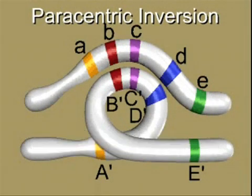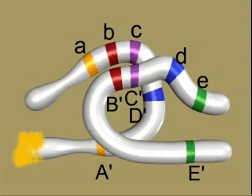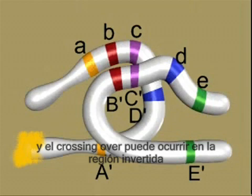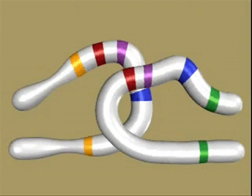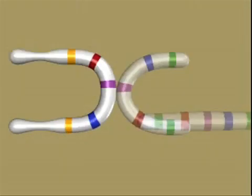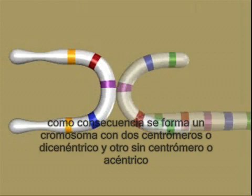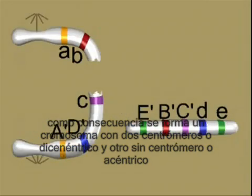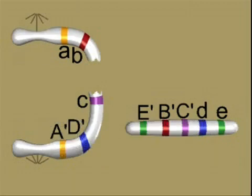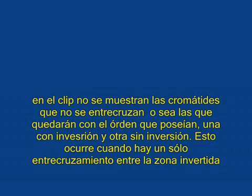Crossing over can occur in the inverted region. Paracentric inversion produces a dicentric chromosome and an acentric chromosome.